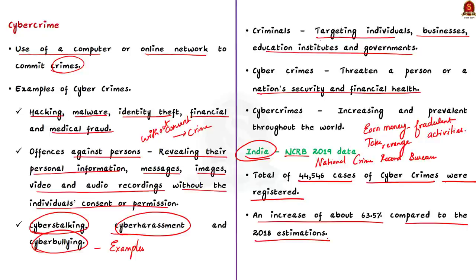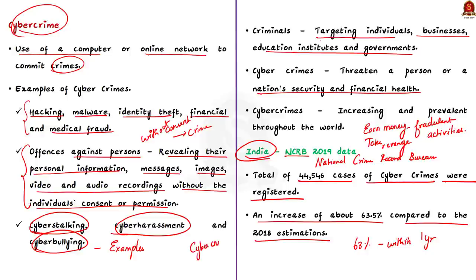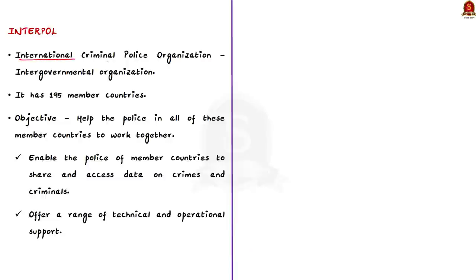A 63% increase was observed within just one year. To combat this growing threat, Interpol — the International Criminal Police Organization — has come up with Operation HE2. Before going into the operation, let us see some details about Interpol. Interpol is an intergovernmental organization — an organization between the governments of different countries — with 195 member countries.